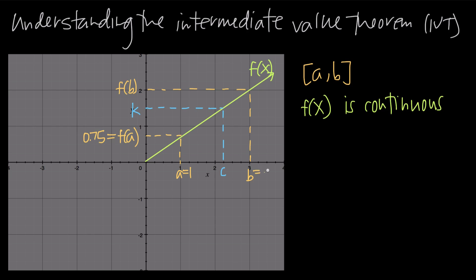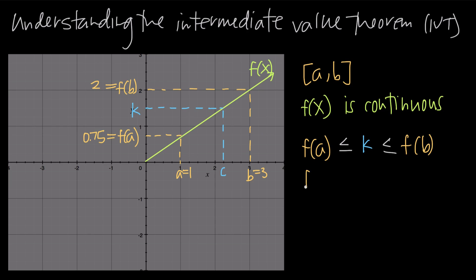We also have the value b, which here happens to be 3. If we plug x equals 3 into the function, we get f of b, or f of 3, which looks like it's about 2. The Intermediate Value Theorem tells us we can pick any value k — some y value — as long as k is between f of a and f of b: f of a ≤ k ≤ f of b. If the function were decreasing instead, we'd have f of b ≤ k ≤ f of a. Either way, k sits between f of a and f of b.